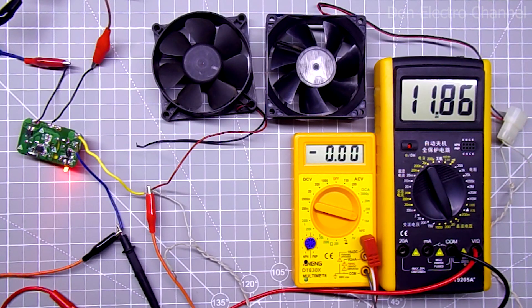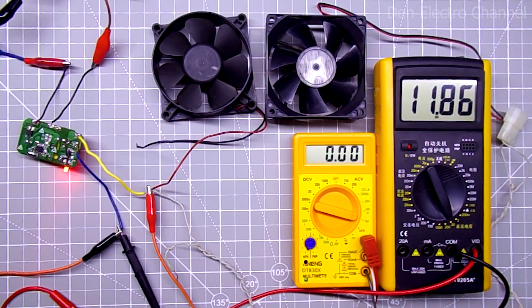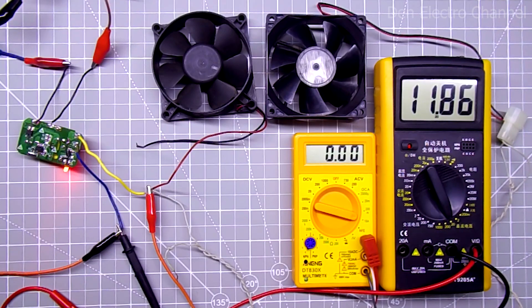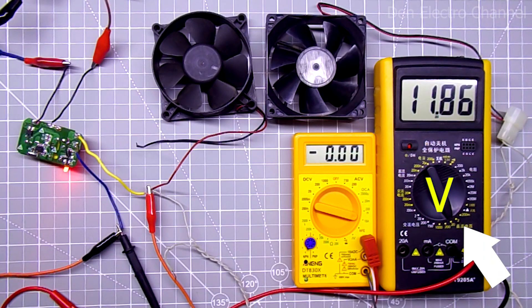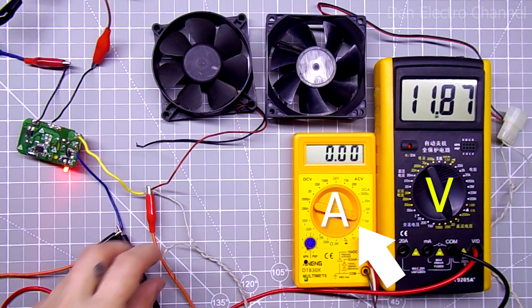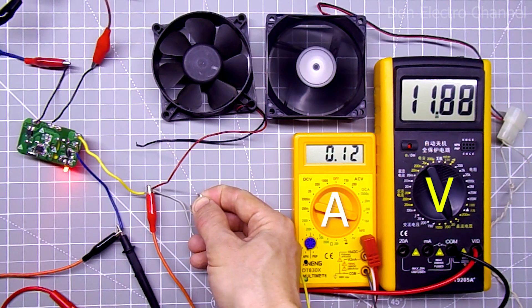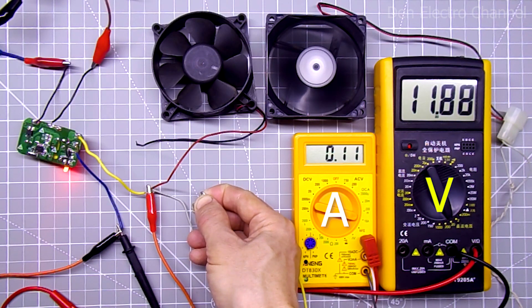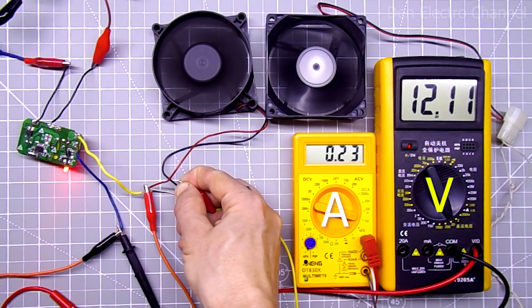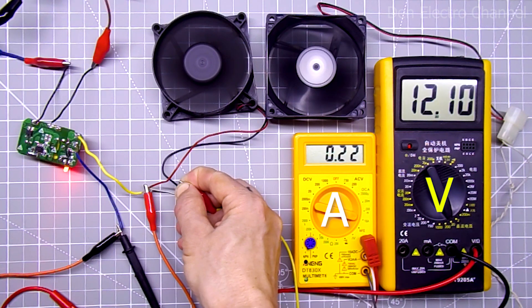Now I'll try to connect something else, say two fans. These are fans from computer power supplies. Each of them is designed for 12 volts and a current consumption of approximately 100 to 120 milliamperes. This multimeter will show the voltage at the output of the power supply. And this current is through the load. I connect the first one. The current is 120 milliamperes. The voltage does not drop. Now the second one. Total current 210 milliamperes. The voltage increased slightly to 12.1 volts. The power supply can easily carry two such fans.